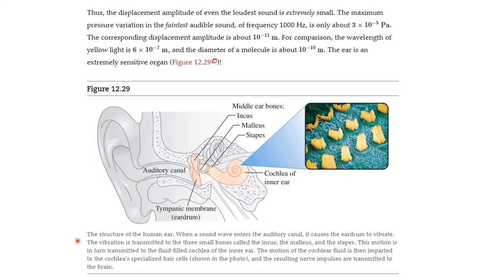The structure of the human ear. When a sound wave enters the auditory canal, it causes the eardrum to vibrate. The vibration is transmitted to three small bones called the incus, malleus, and the stapes. This motion is in turn transmitted to a fluid filled cochlea of the inner ear. The motion of the cochlea fluid is that imparted to the specialized ear hair cells shown here. And the resulting nerve impulses are transmitted to the brain. It is an amazing thing.